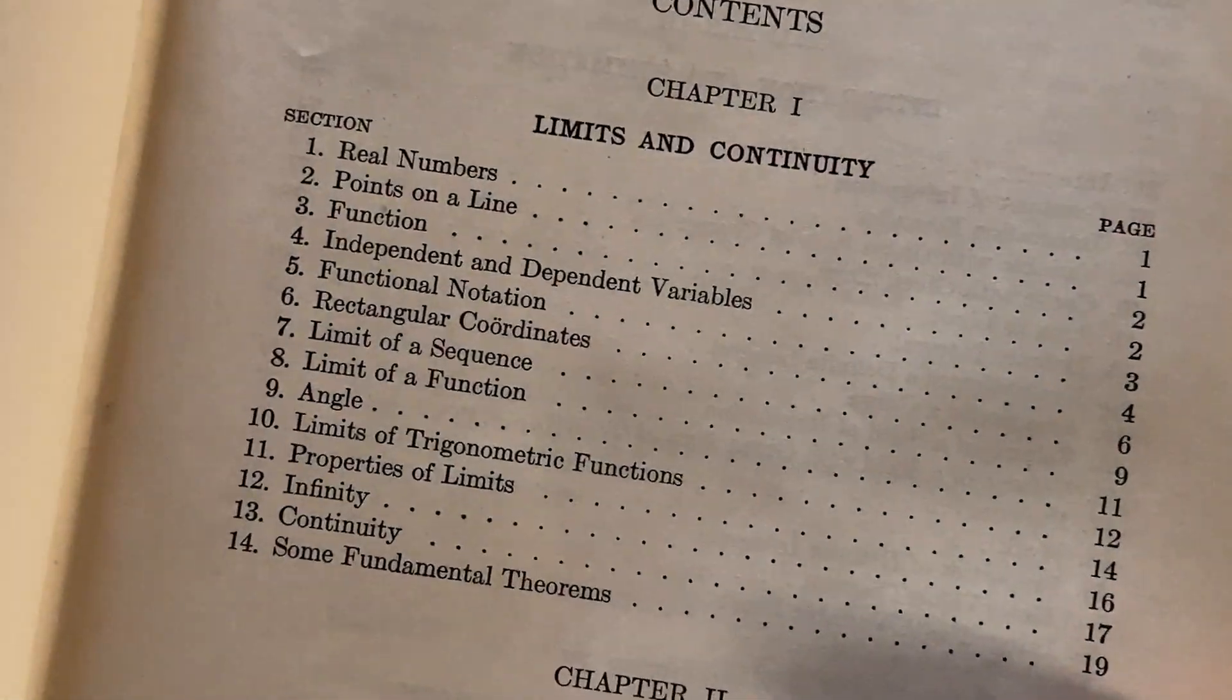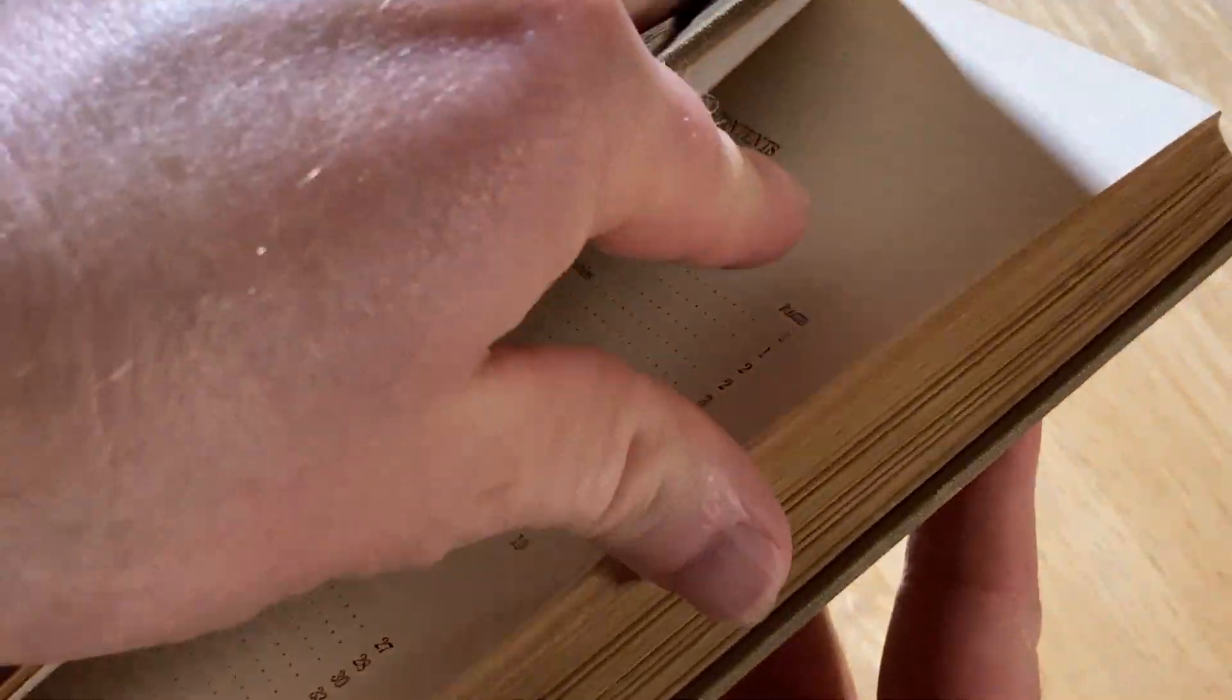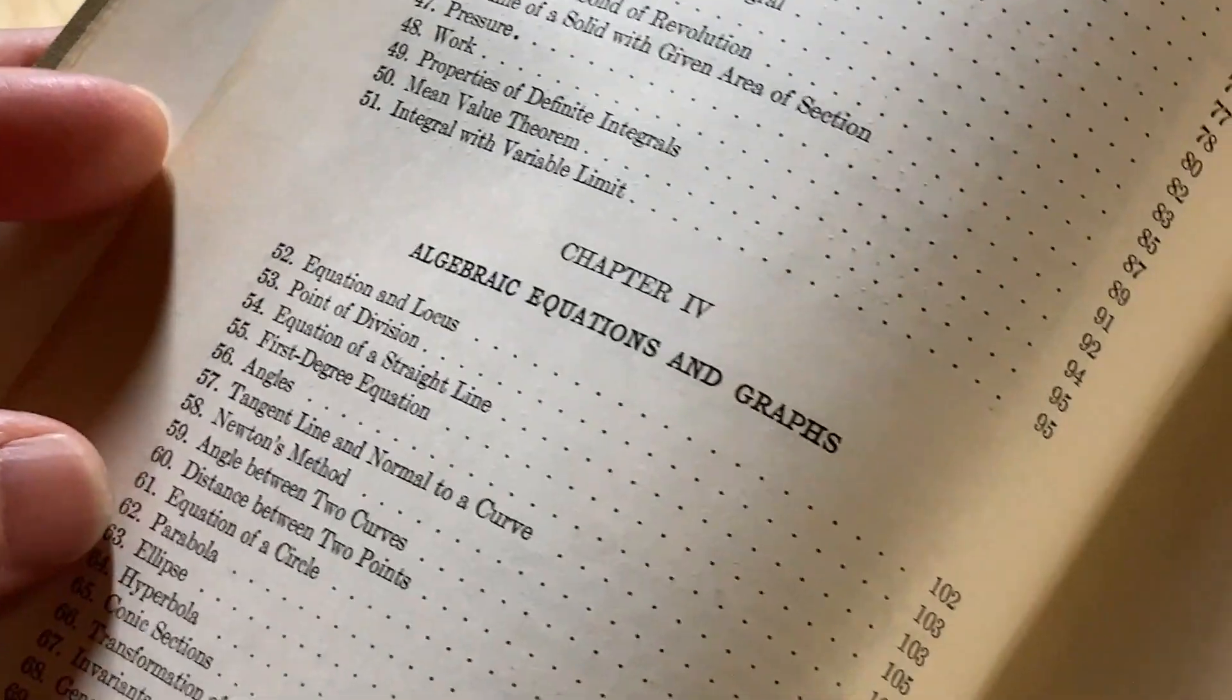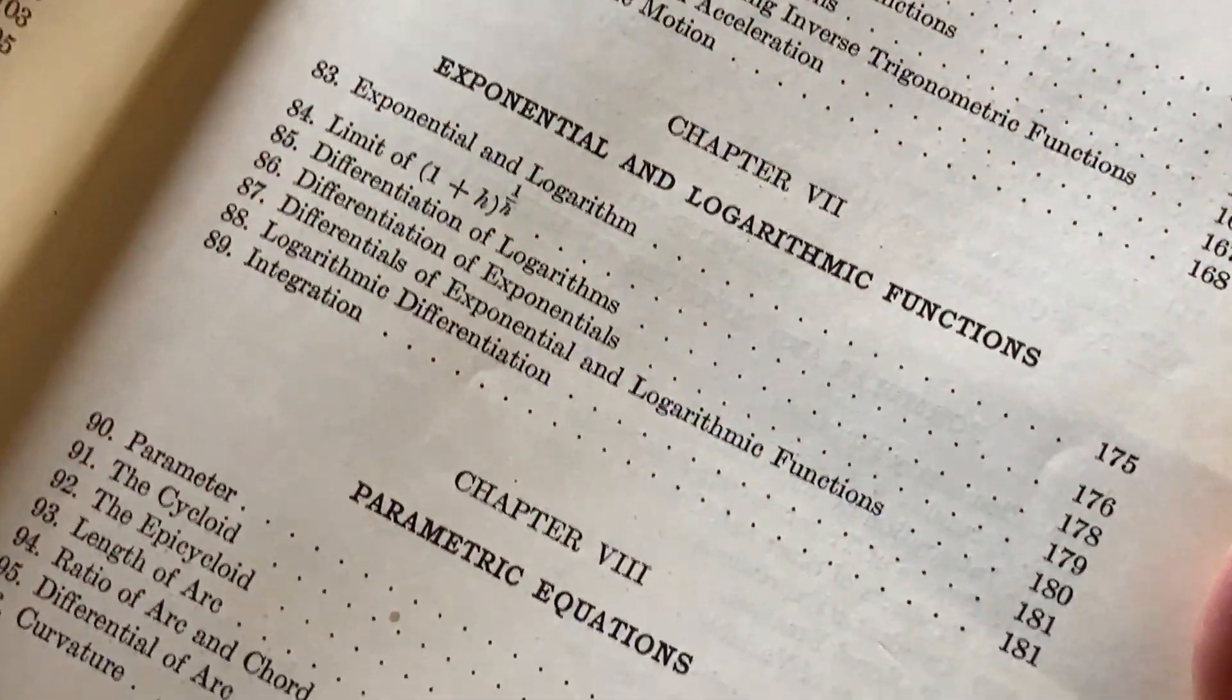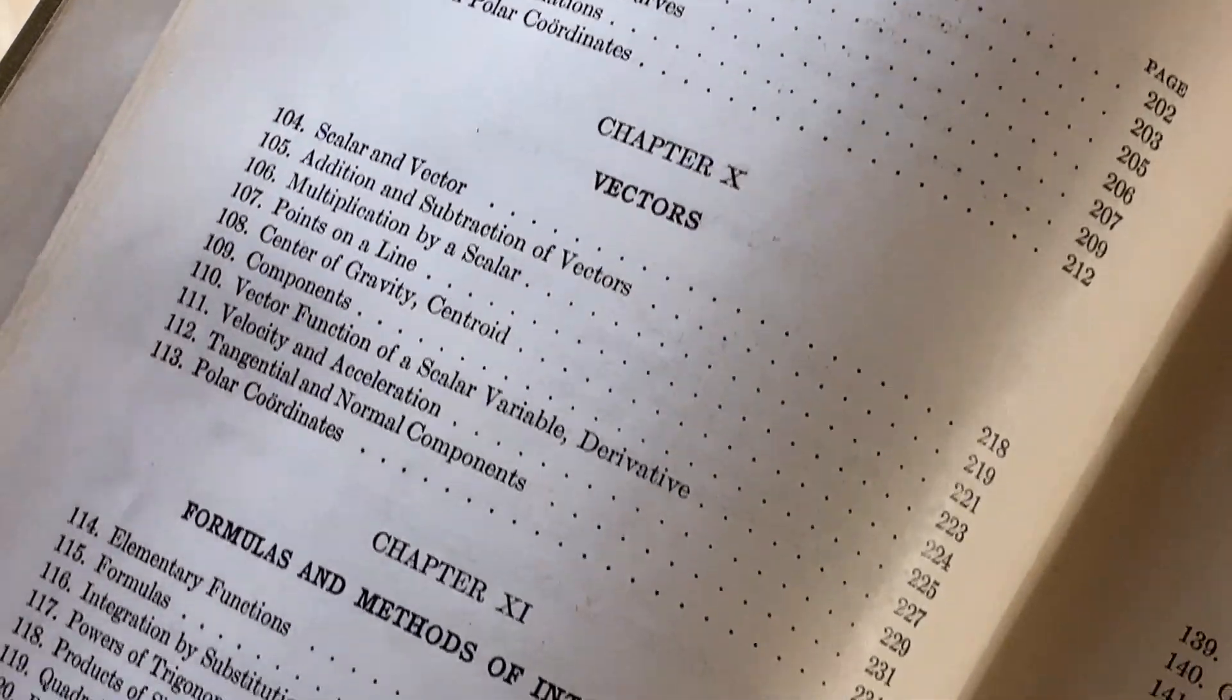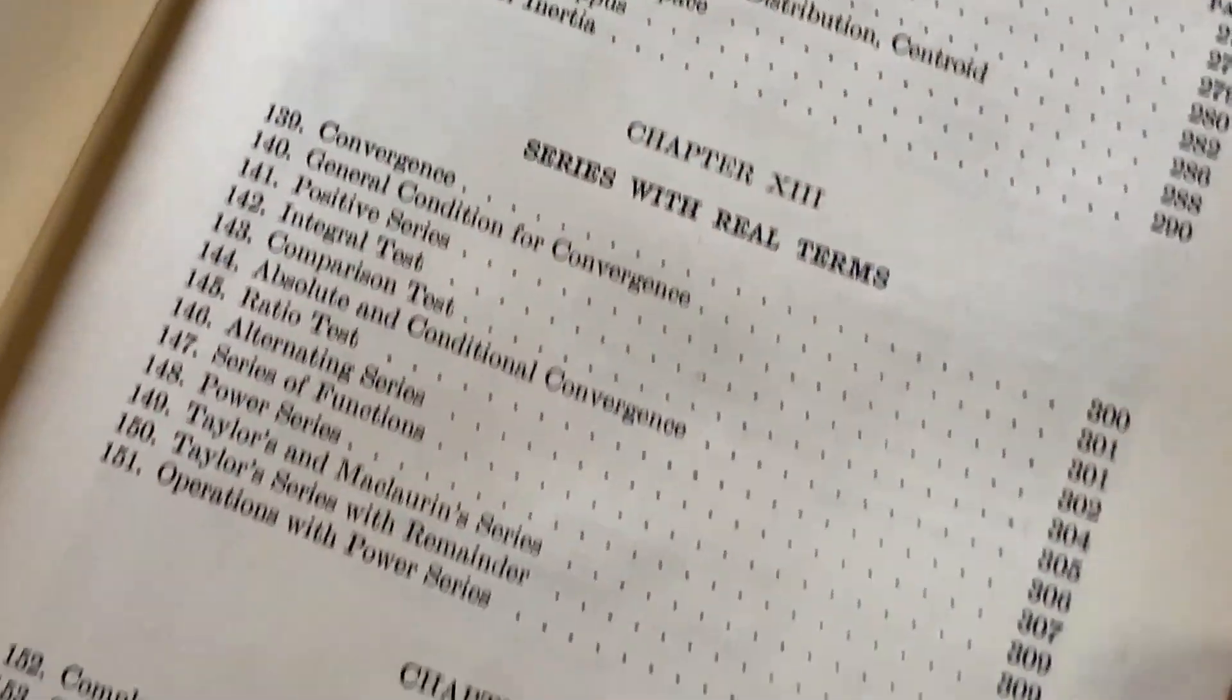So here's a quick look at the contents. Limits and continuity, that's the first chapter. Derivative and differential, chapter two. Integration and summation, chapter three. Algebraic equations and graphs, chapter four. Determinants, trig functions, exponential and logarithmic functions, parametric equations, polar coordinates. Lots of topics. It's a very condensed book. He goes through the topics very quickly.